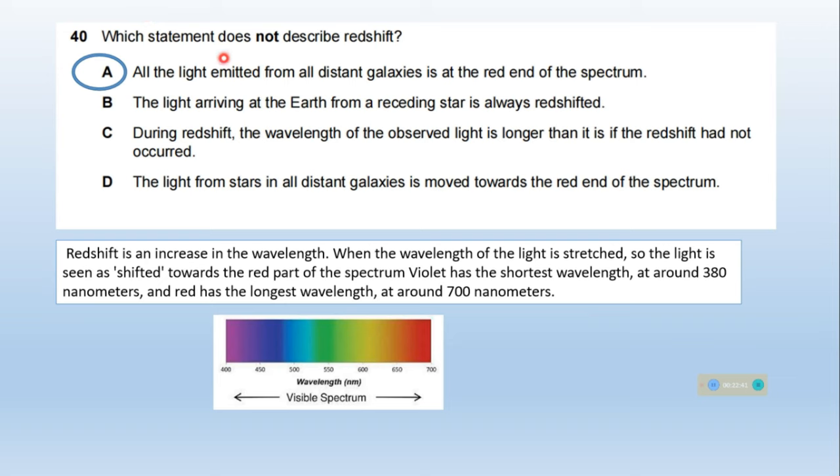Which statement does not describe redshift? Redshift is an increase in wavelength. When the wavelength of light is stretched, the light is seen as shifted toward the red part of the spectrum. This is the visible spectrum. Violet has the shortest wavelength around 380 nanometers, and red has the longest wavelength around 700 nanometers. Option A is the right one.